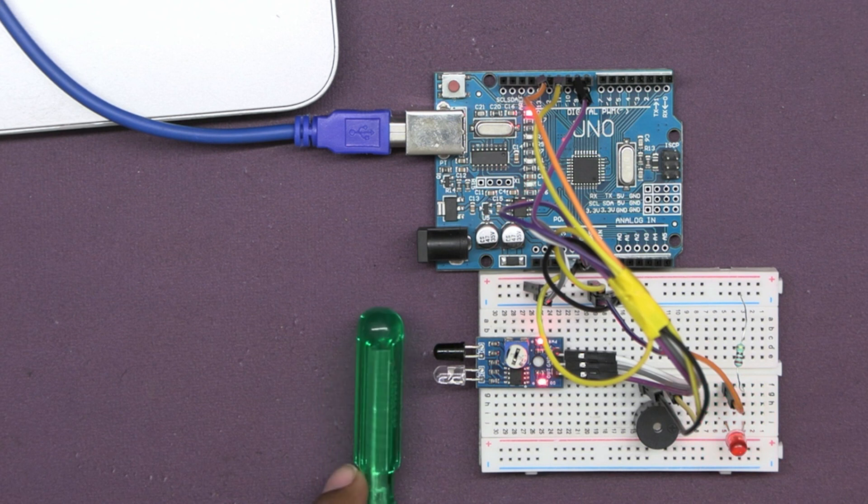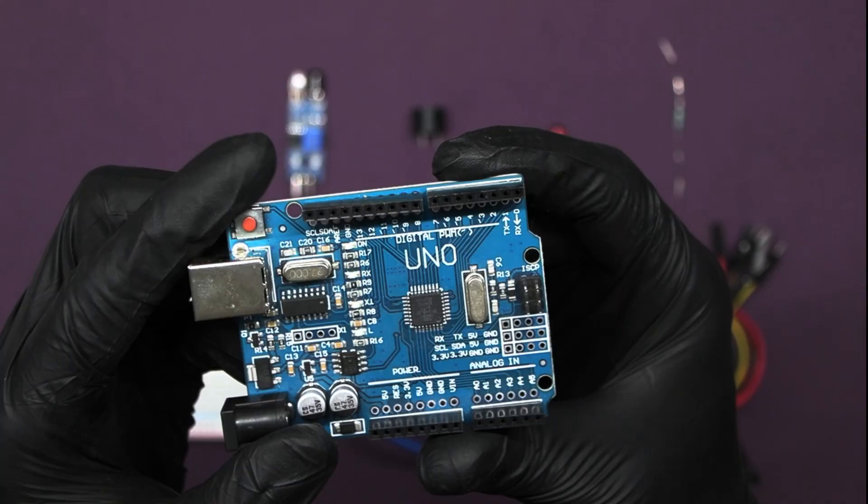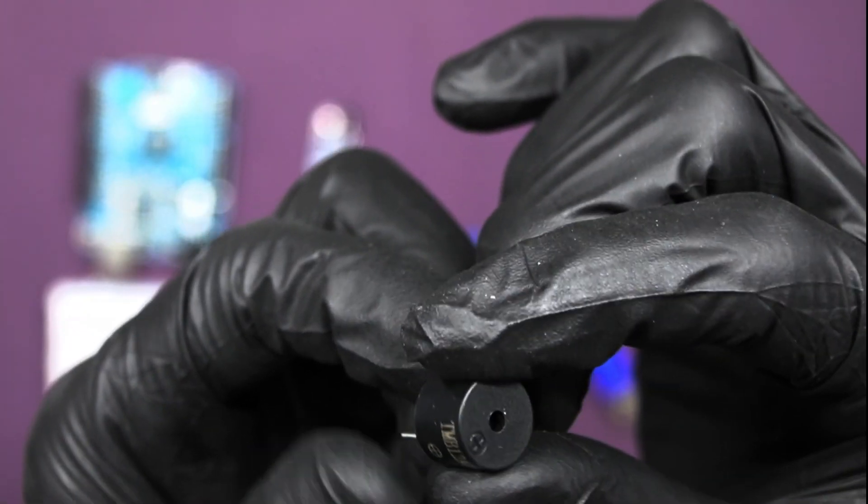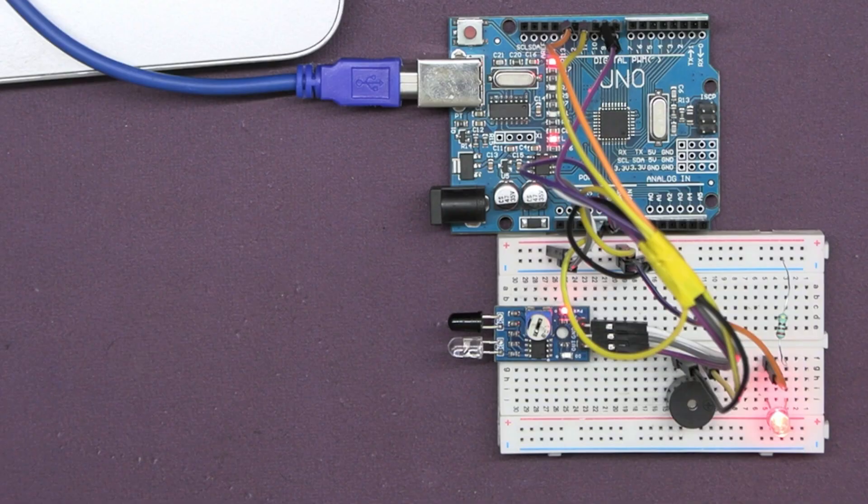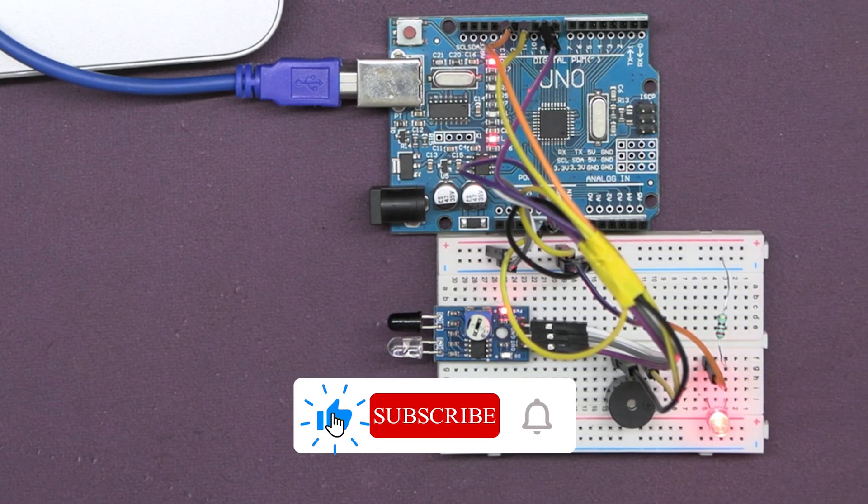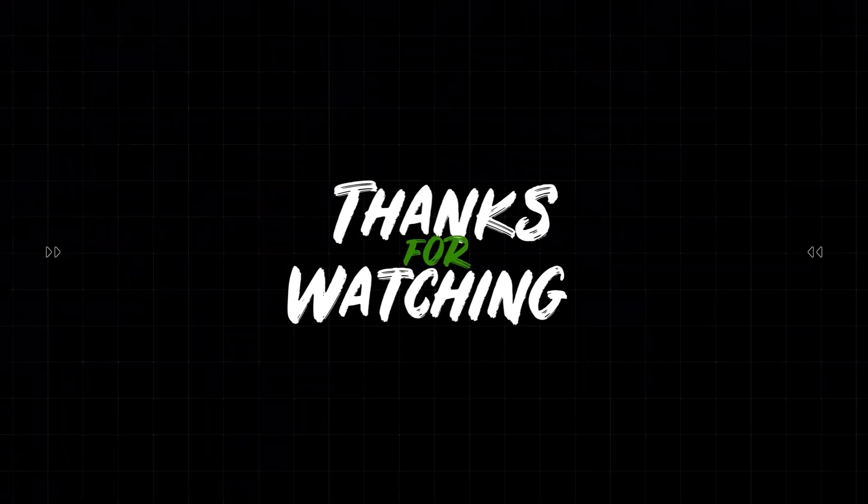So this is the magic of coding. In this video, we have successfully interfaced an IR sensor, Arduino UNO, and used it to control a buzzer and LED. Subscribe to our channel for more exciting upcoming projects. Till then keep learning.